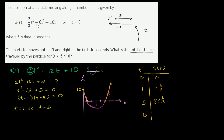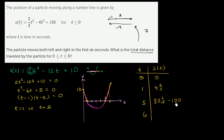Continuing s(5): 83⅓ - 6(25) + 10(5) = 83⅓ - 150 + 50 = 83⅓ - 100 = -16⅔. So the position at t = 5 seconds is -16⅔.